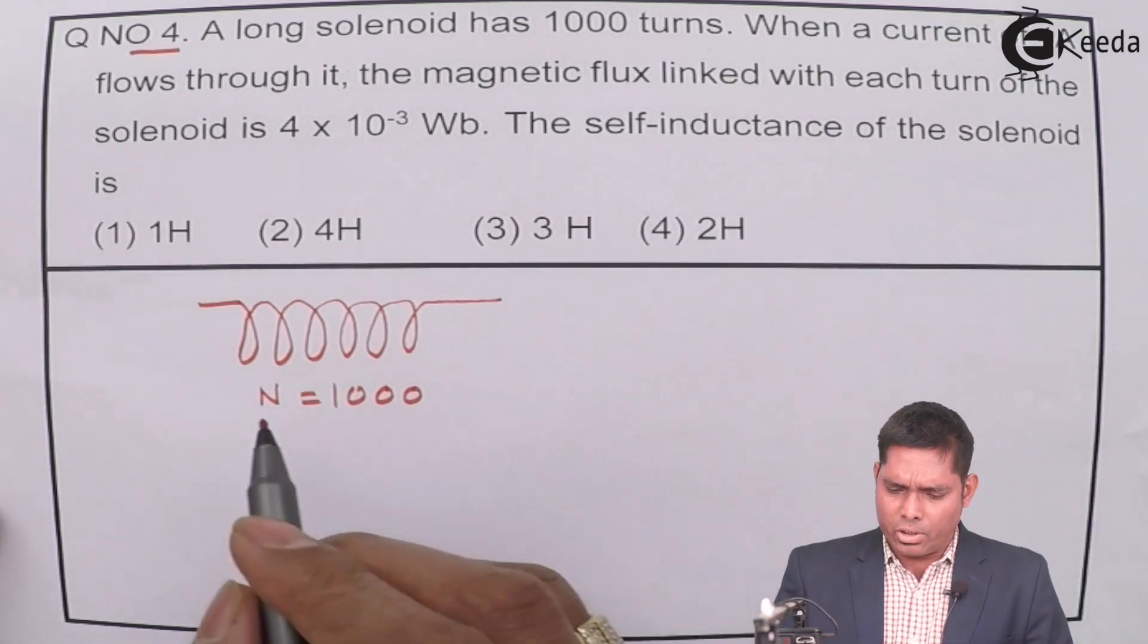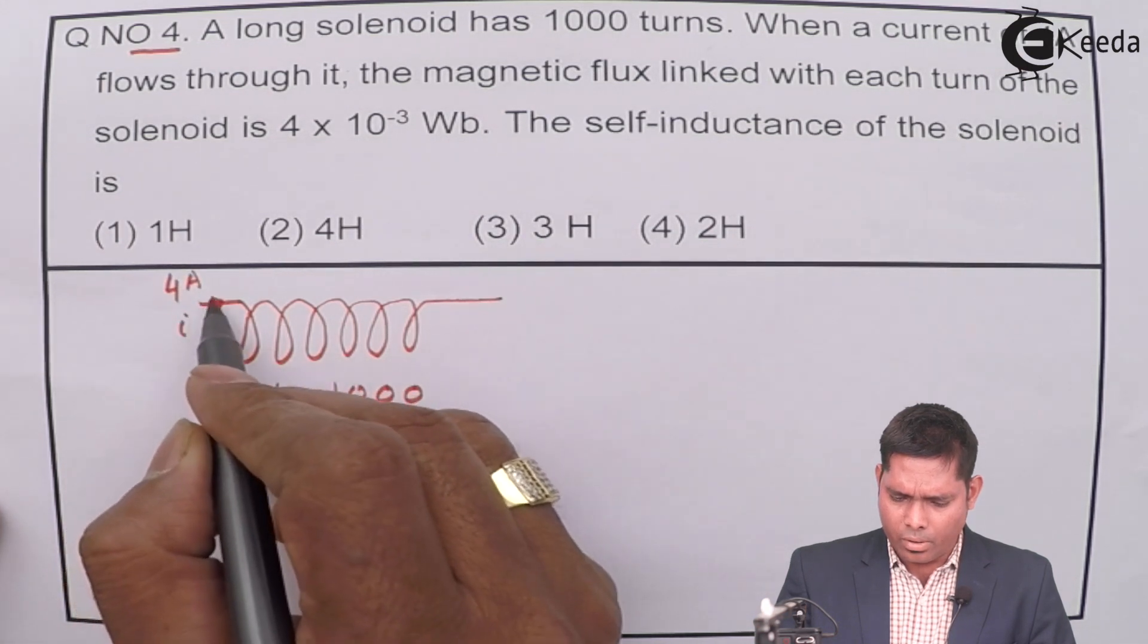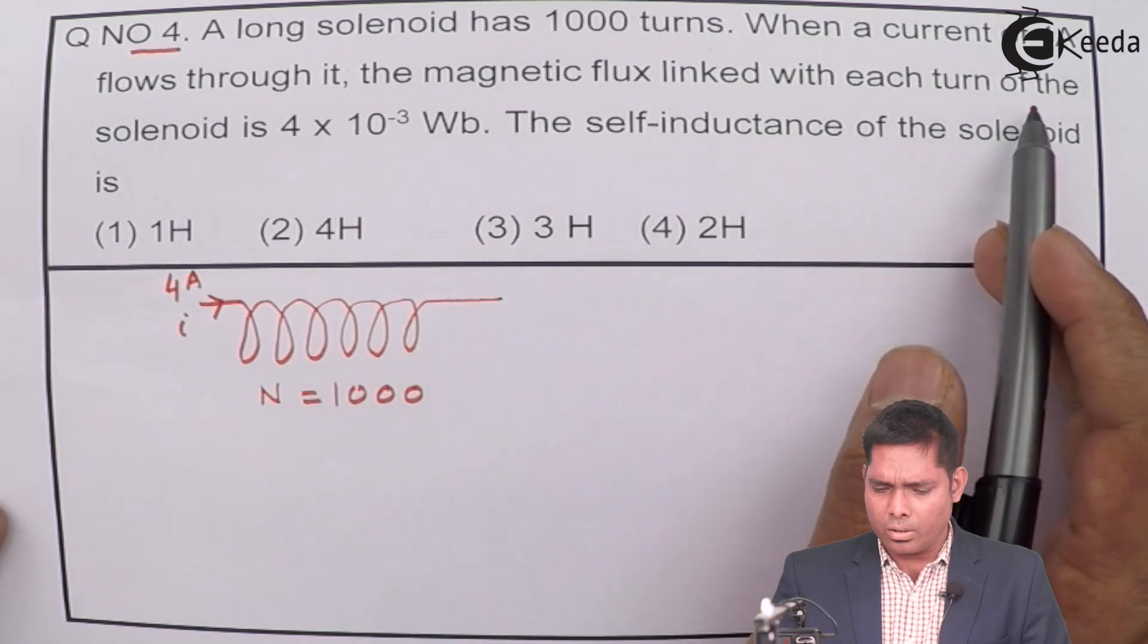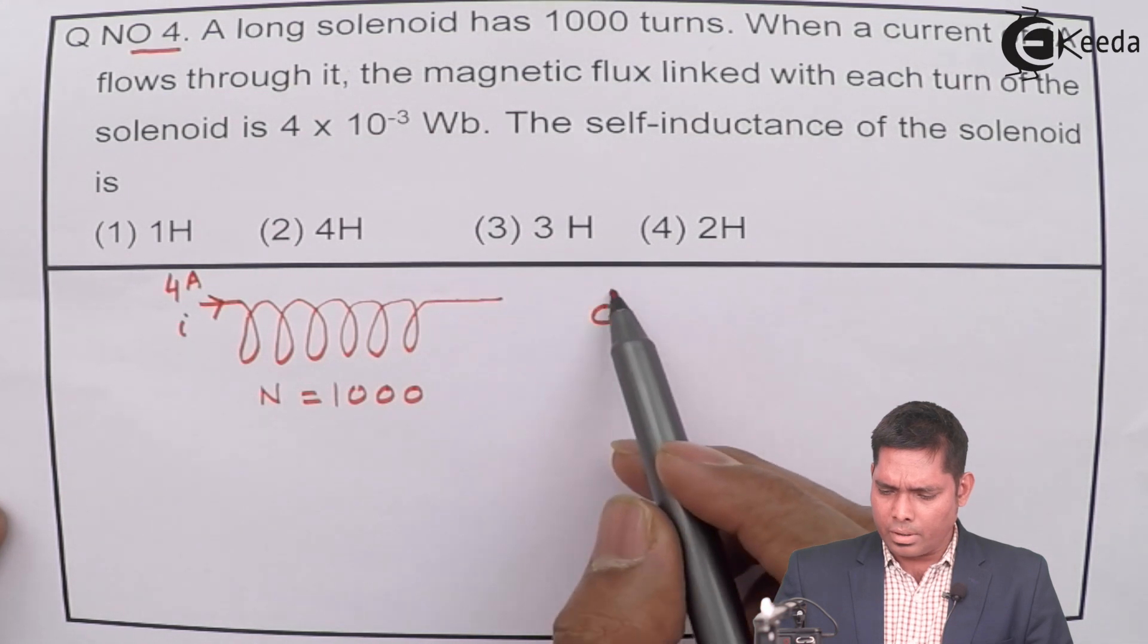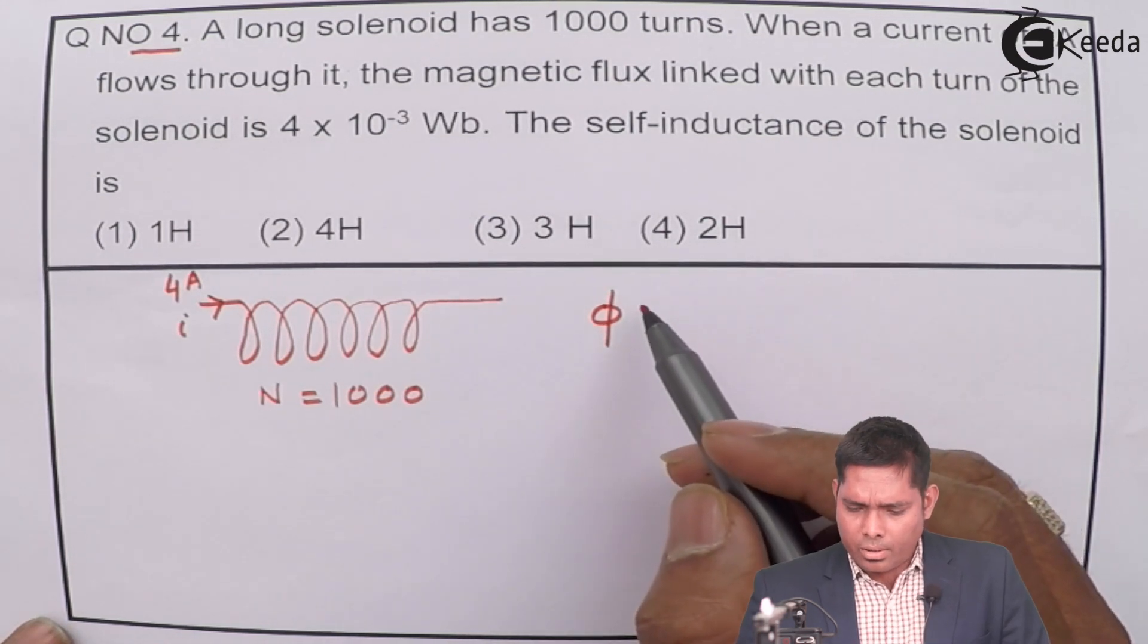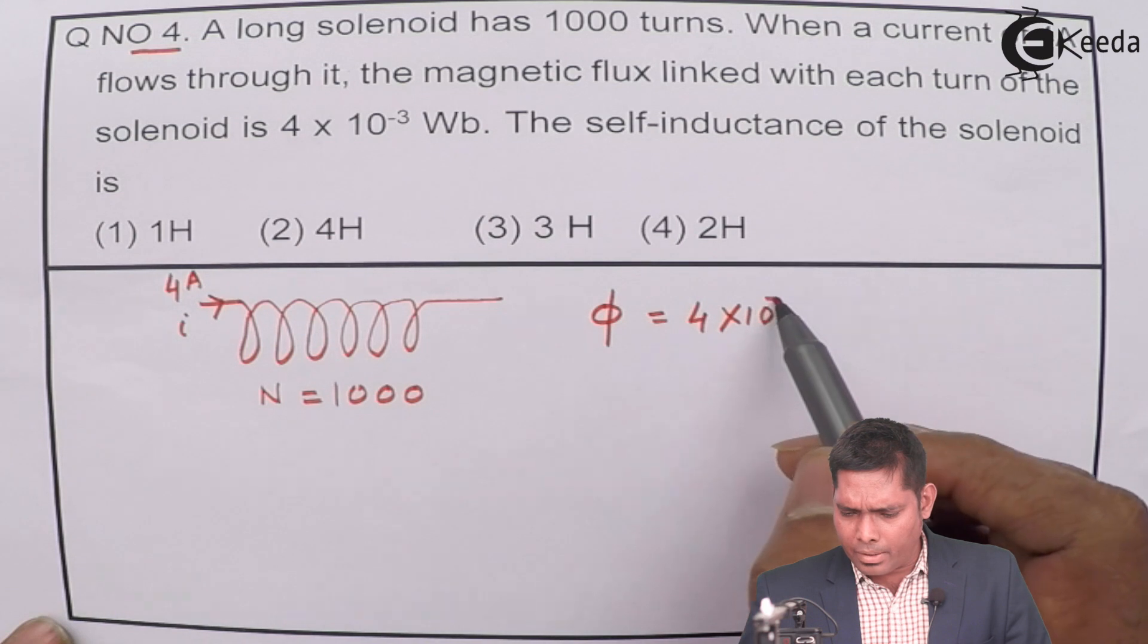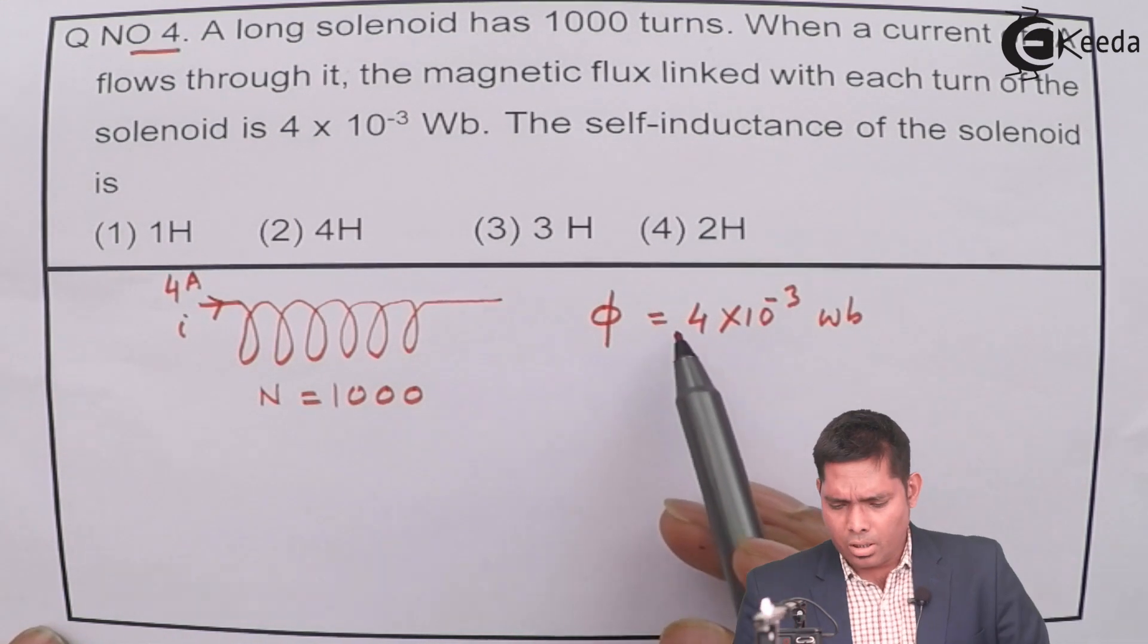When a current of 4 ampere flows through it, the magnetic flux linked with each turn of the solenoid is given by 4 × 10^-3 Weber. Each of these coils is associated with this flux.